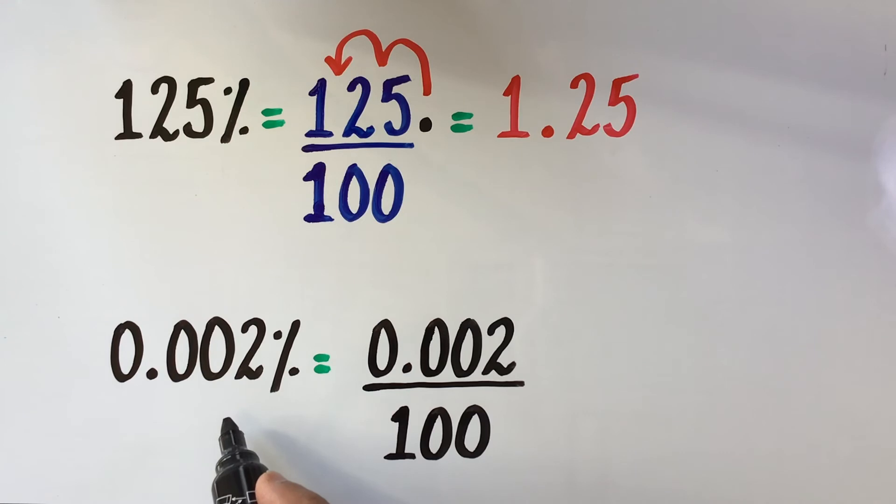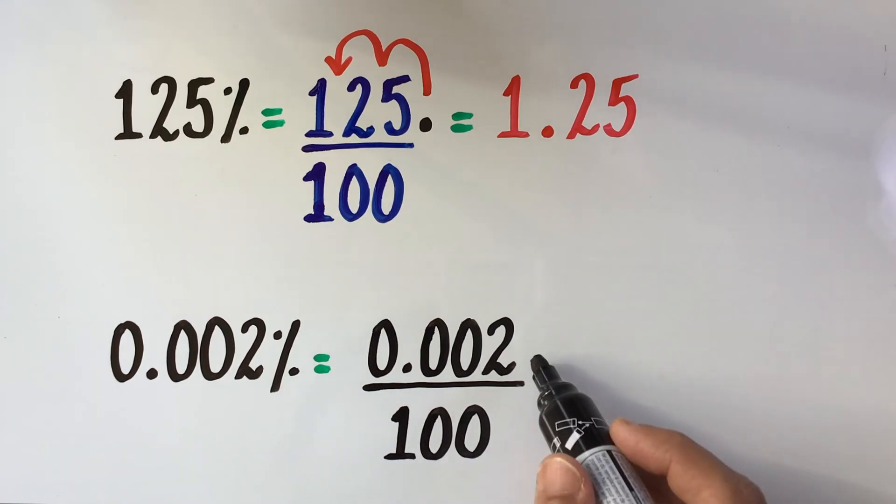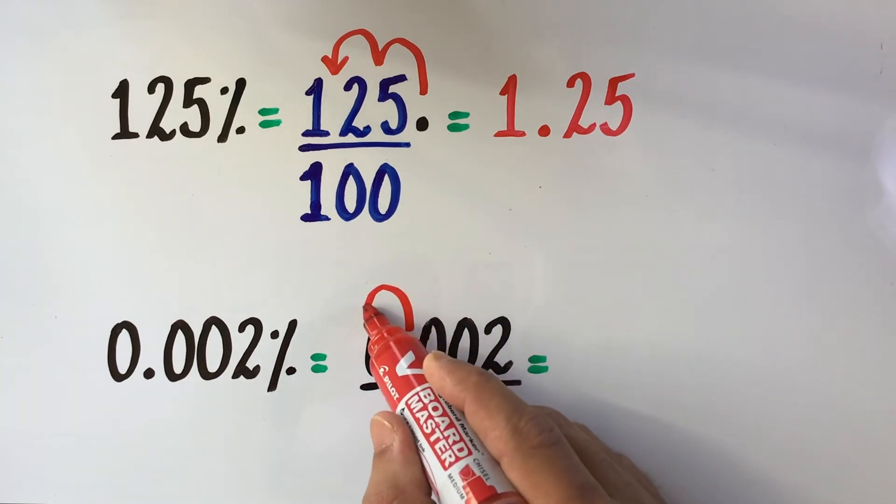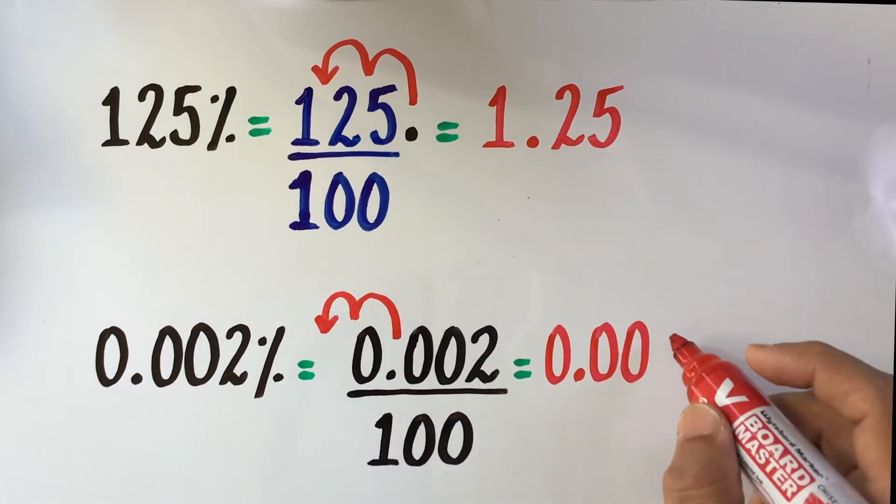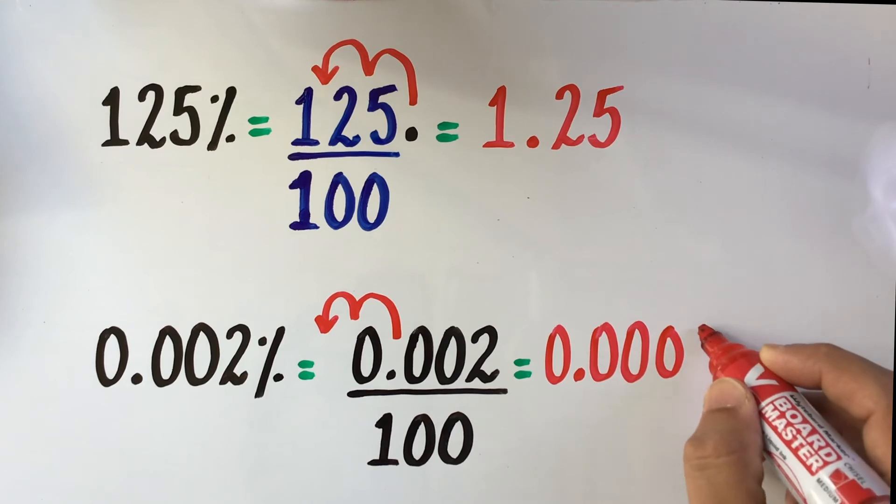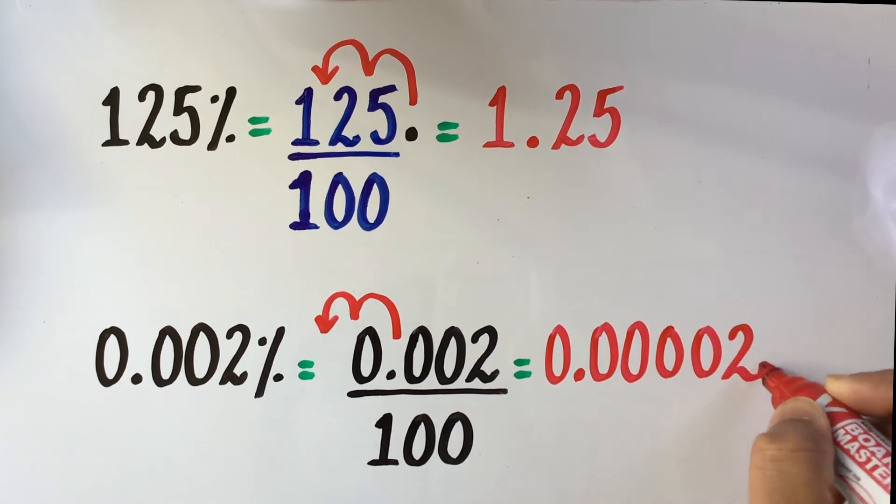In this example, when we write 0.002% as a fraction over 100, we get 0.002 over 100. Moving the decimal point two places to the left, we get 0.00002 as the answer.